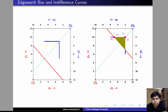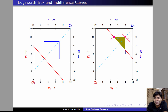So let us consider a movement to a point such as beta. Now if we are going to move to beta from alpha, we are improving the satisfaction level of individual 1 and we are keeping the satisfaction level of individual 2 the same as before. So clearly this is an improvement. So alpha is not an efficient point because beta leads to an increase in the satisfaction level of 1 without reducing the satisfaction level of 2.